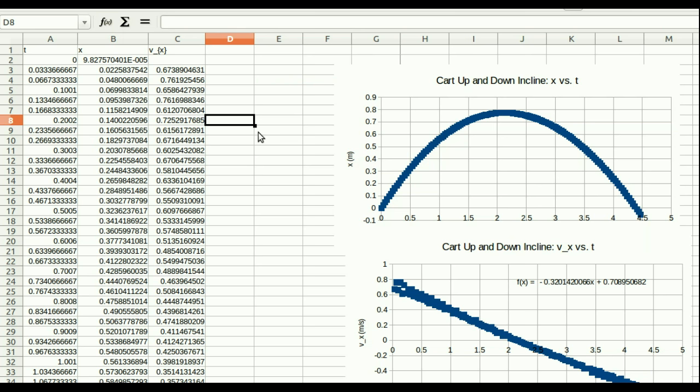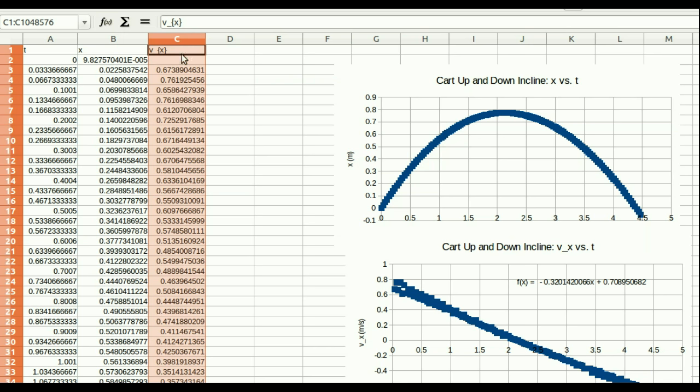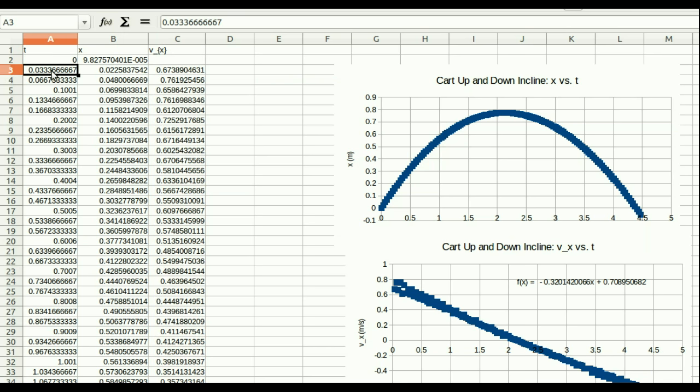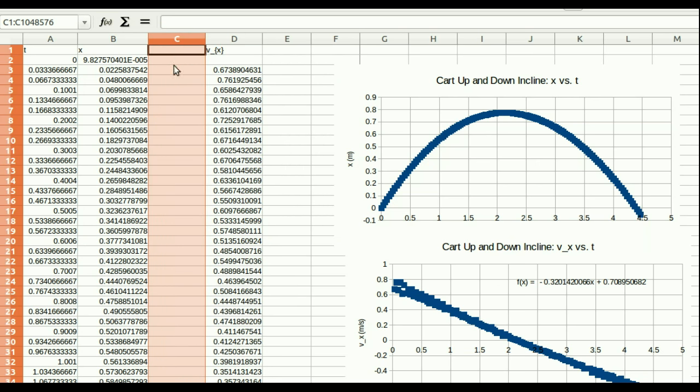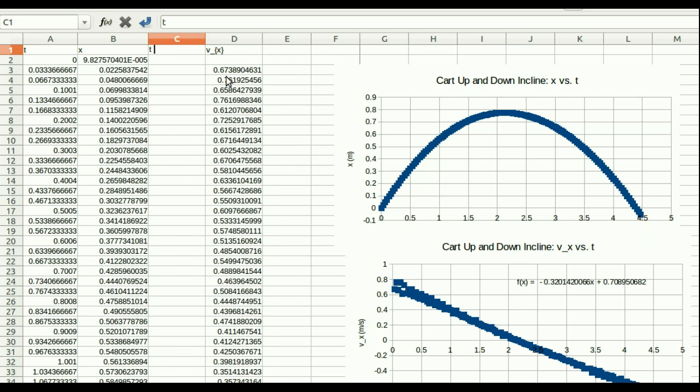But let's just apply those ideas to data. Here's our cart up and down the incline, data we've seen before. And what we've now realized is that our column of x components of v here are kind of misaligned with the times. This v is probably a better approximation to v at a time halfway between these v's, and so on. So, I'm going to insert a new column and call it t for v_x, right? These are the t's that we would use for referring to these v's.